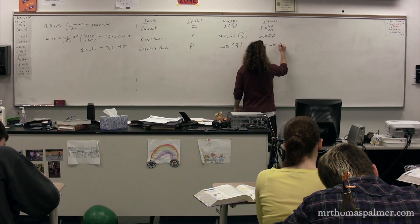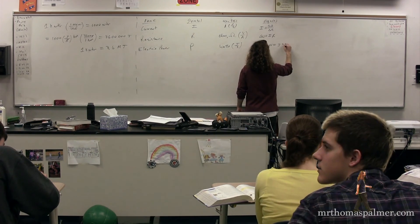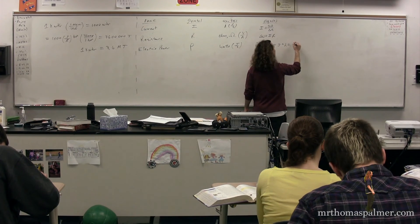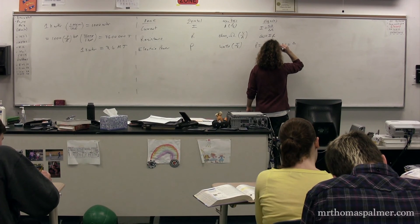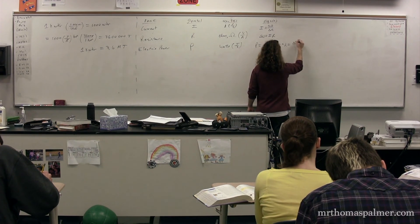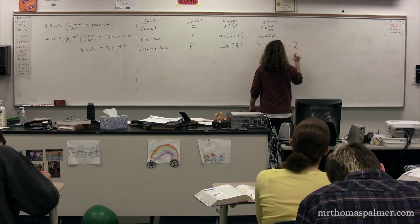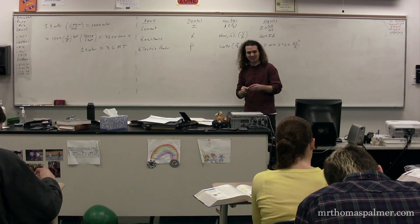Which is also equal to? The current squared times the resistance. And lastly... The electric potential difference squared divided by the resistance. We have now added to our table.